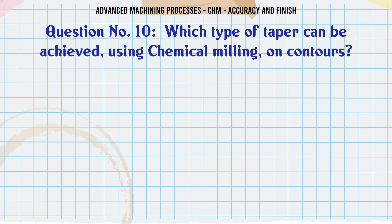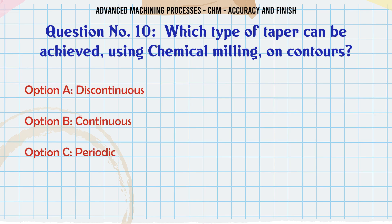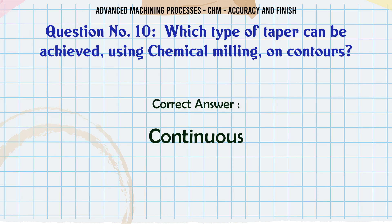Which type of taper can be achieved using chemical milling on contours? A. Discontinuous. B. Continuous. C. Periodic. D. None of the mentioned. The correct answer is continuous.